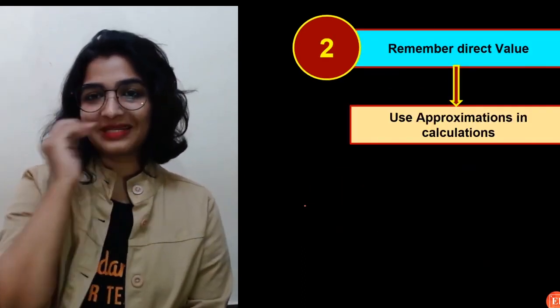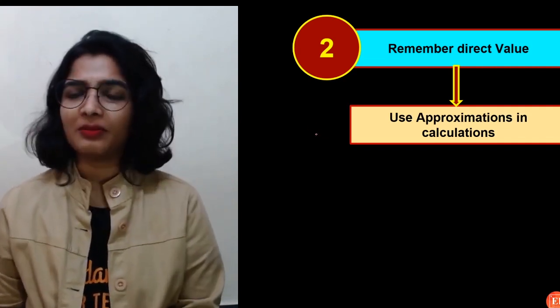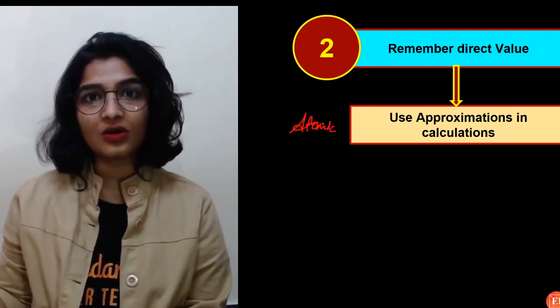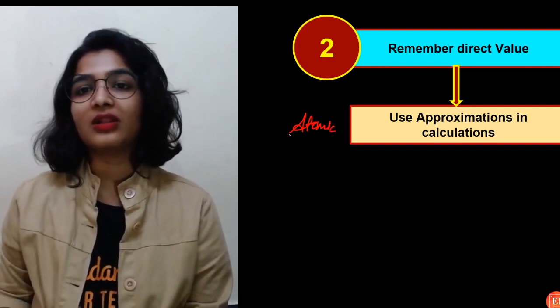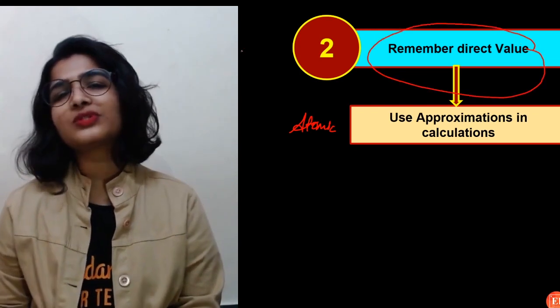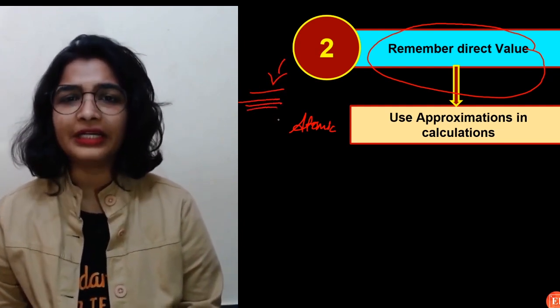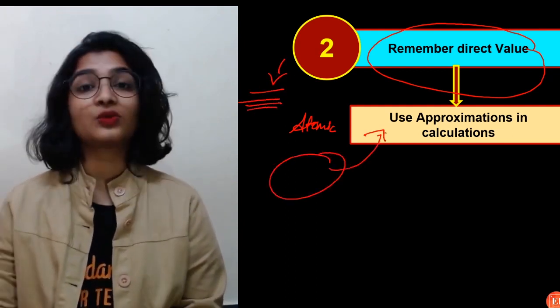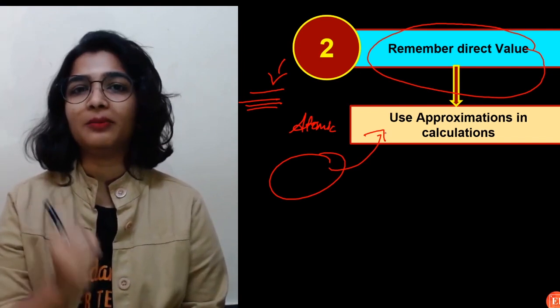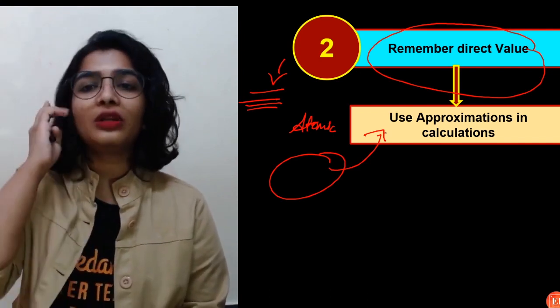The next second tip is, remember the direct values. So of course, in chemistry, we do not have so many values to remember, maybe the atomic masses or the Avogadro number, the gas constant for 11th and 12th grade students and all that, but try to remember the direct values. So I don't want you to sit and substitute the value in this formula and trying to find out the value, which you will be using it in some different formula. Because in competitive exams, the time management is very, very, very important. So please utilize the time very smartly.